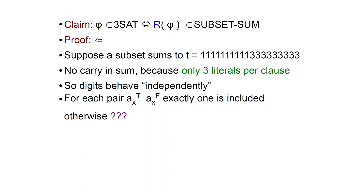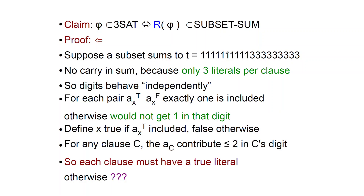We also note that in our subset, for each pair of numbers ax_true and ax_false, exactly one is included. Why? Because in each variable digit we have to get to one. So you must sum exactly one one there — if you included both, you'd get two in that digit, and if you included neither, you'd get zero. This gives us structure about the subset: for each pair ax_true and ax_false, exactly one is included.